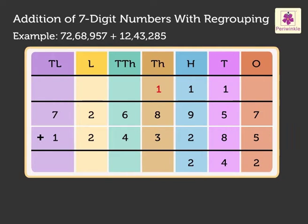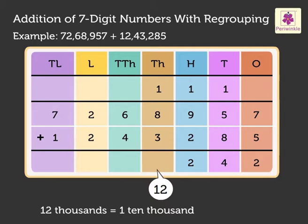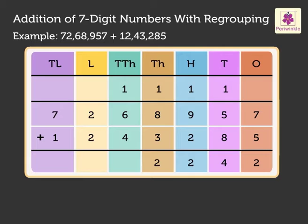Next, 1 plus 8 plus 3 equals 12. Regroup the 12 thousands to 1 ten-thousand and 2 thousands. Carry the 1 ten-thousand to the ten-thousands column and write 2 in the thousands column.